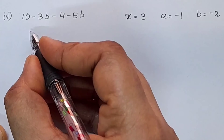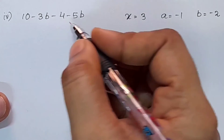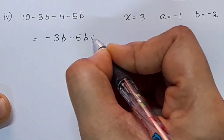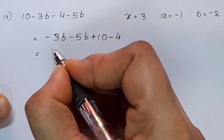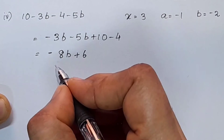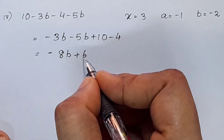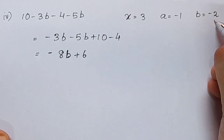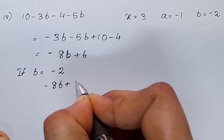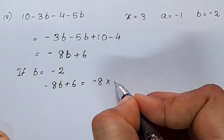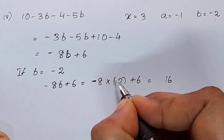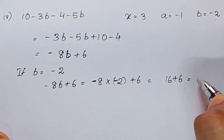Next question: 10 minus 3b minus 4 minus 5b. We rearrange: negative 3b minus 5b plus 10 minus 4, which gives negative 8b plus 6. Substituting b equals negative 2: negative 8 into negative 2 plus 6 equals 16 plus 6, which equals 22.